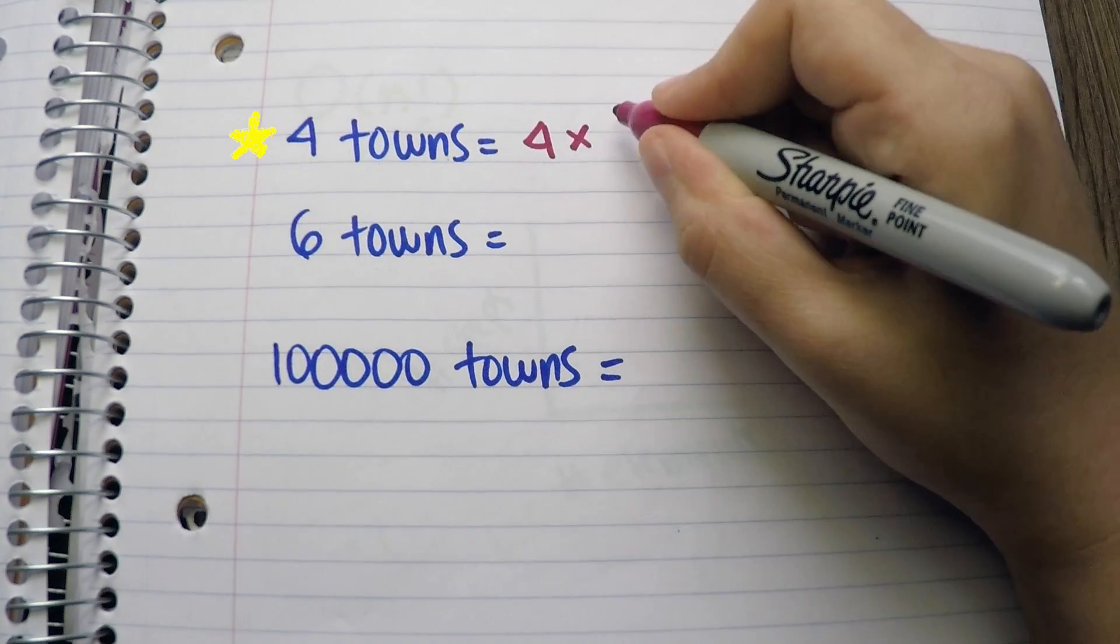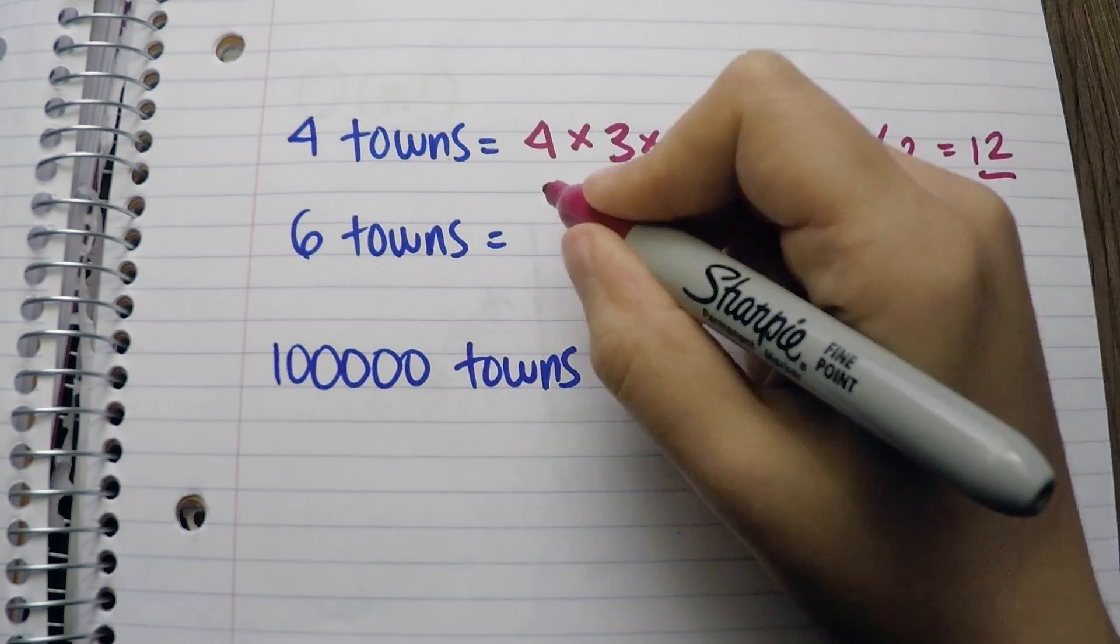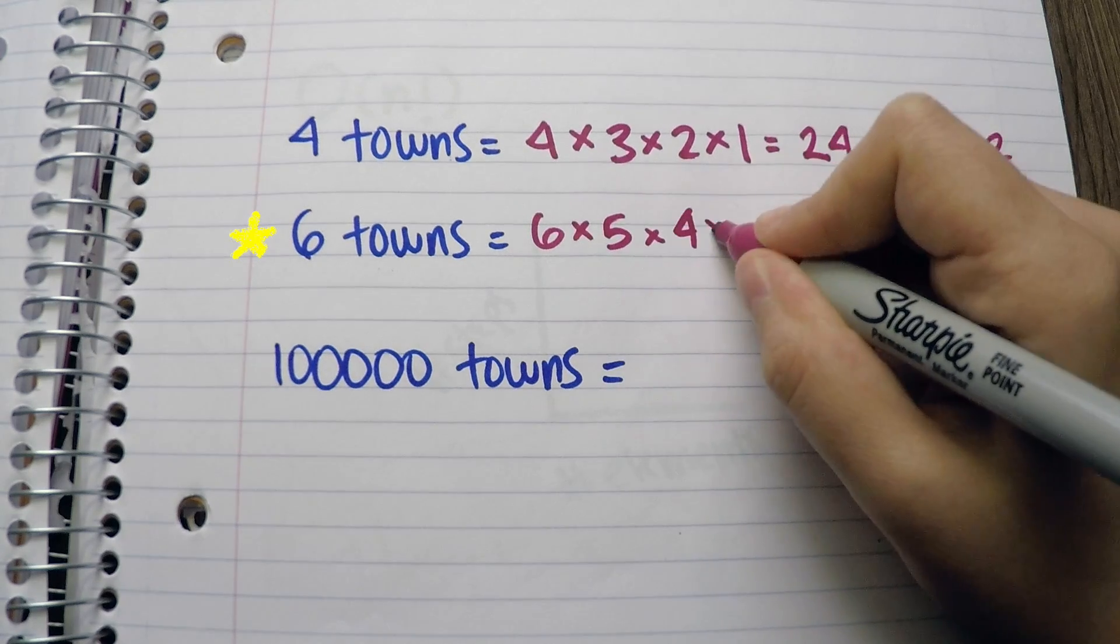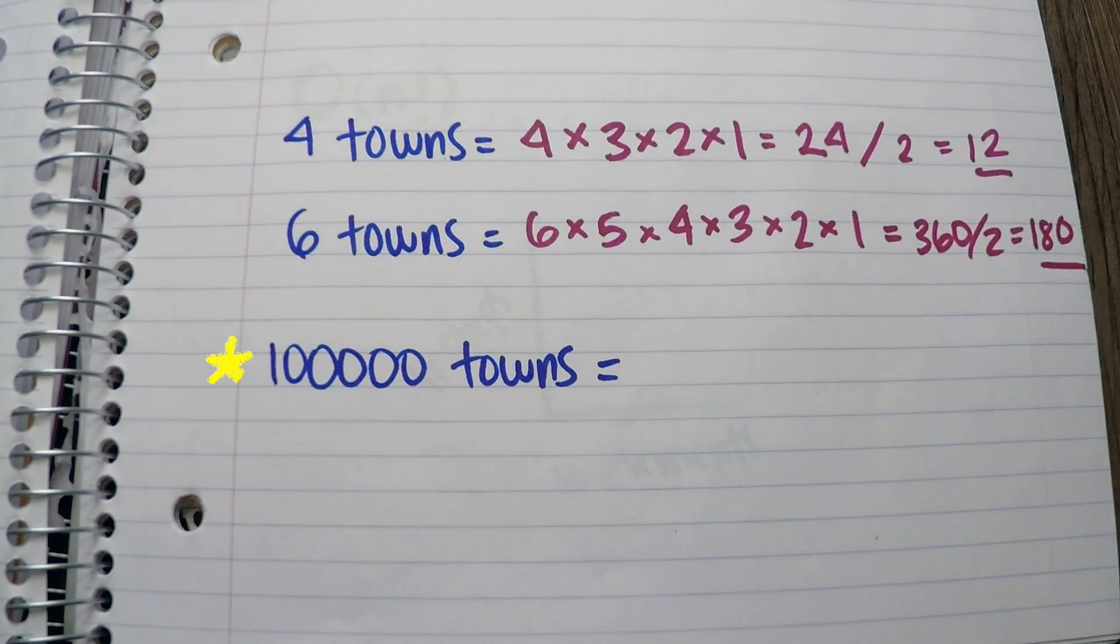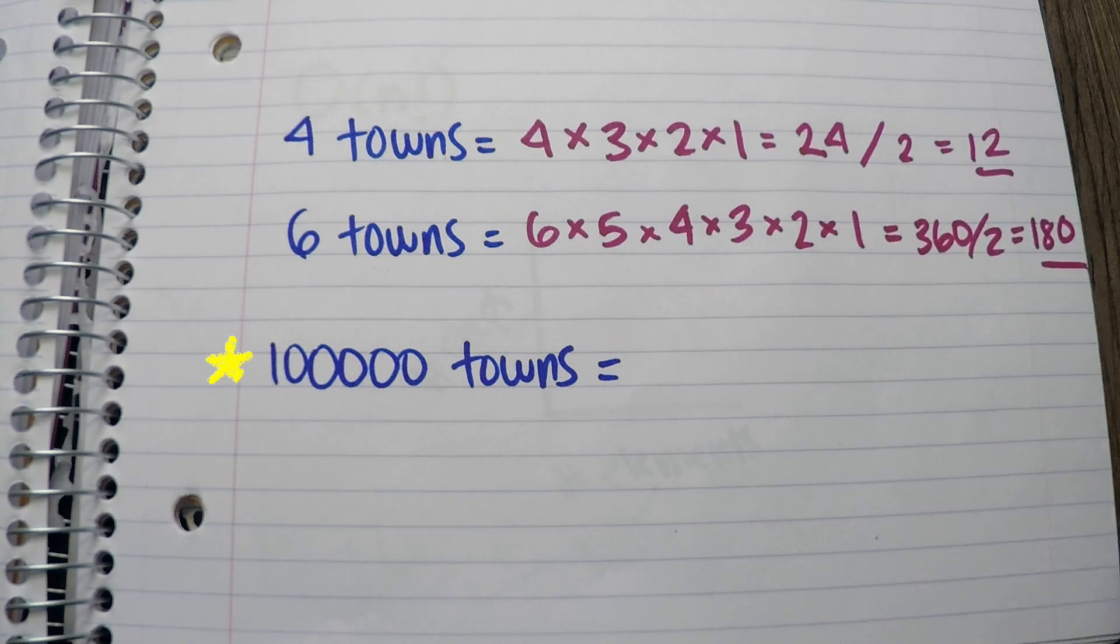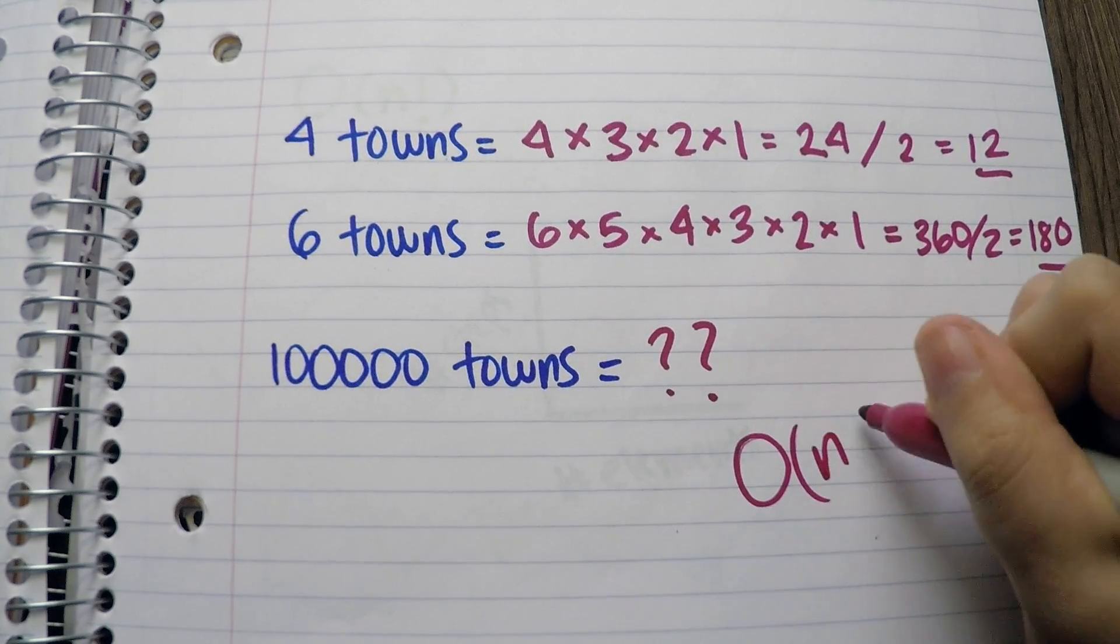If the salesman needs to go to four towns, it would be 24 options with 12 unique ones. Six towns would be 360 with 180 options. And what if our salesman had 100,000 towns? It would be 100,000 factorial, which is over 5 million digits long.